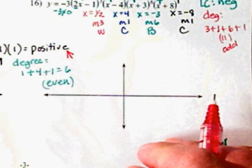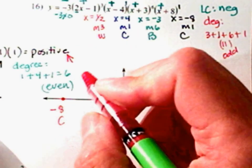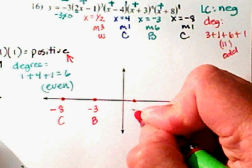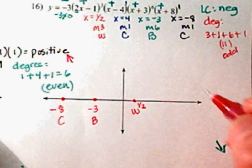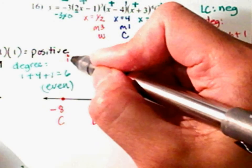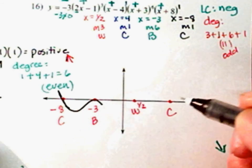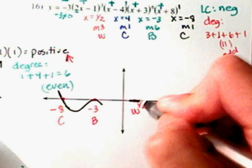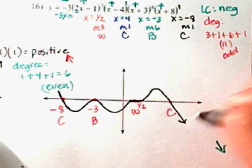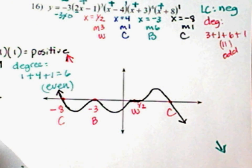Let's mark: negative 8 is a cross, negative 3 is a bounce, 1 half is a wave, and 4 is a cross. I start up here in quadrant 2, cut through negative 8, bounce at negative 3, then wave at 1 half — approach flat, go through, come out the other way — then cross at 4 and end going down. It doesn't look pretty, but you're just trying to see how the graph acts at the x-axis. Thank you guys, have a good day — I'll try to get your other ones done.